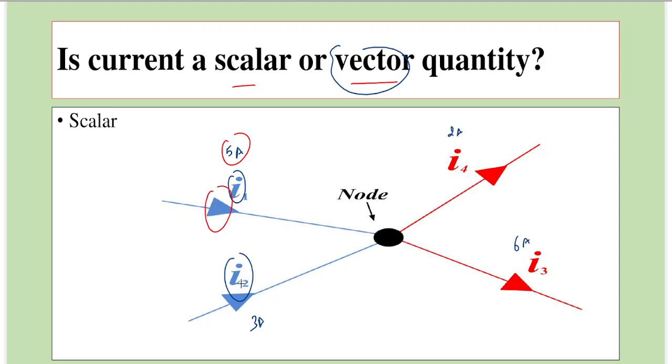Now with this alone it is tempting us to understand that current could be a vector quantity. But the current here and here, they do not obey vector laws.